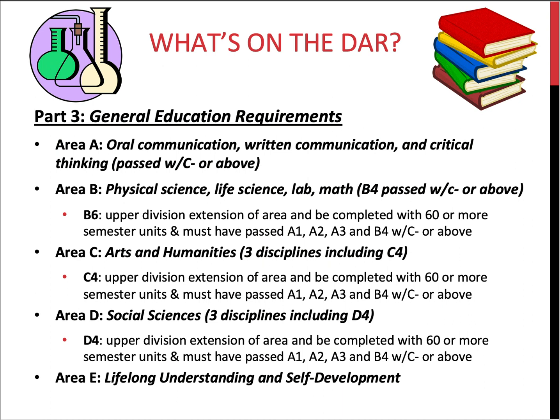Now for the upper division GE requirements. There are three upper division courses that are extensions of existing areas: science (B6), arts and humanities (C4), and social science (D4). These courses should be taken once you have completed at least 60 or more semester units, and you must have passed the golden four — A1, A2, A3, and B4 — with a C- or above.